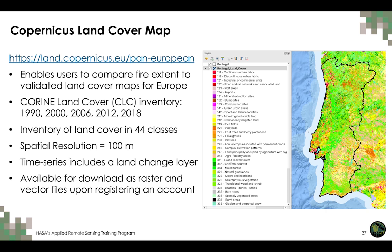To understand how fire can impact land use and land cover, it is important to have an accurate and validated land cover map for one's study area. For Portugal and Europe, this can be acquired through the Copernicus program — the European Union's Earth Observation Program offering information services that draw from satellite, Earth observation and in-situ data. From the provided link, you can access free land cover maps for anywhere in Europe, though an account is required. Land cover maps are inventoried for the years 1990, 2000, 2006, 2012 and 2018, spanning 44 different classes, and are available as raster or vector files. This concludes the post-fire analysis for Portugal.